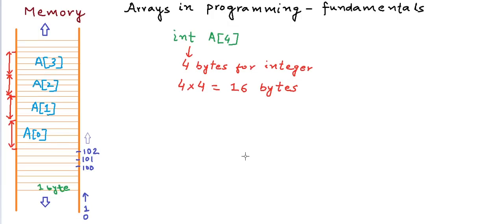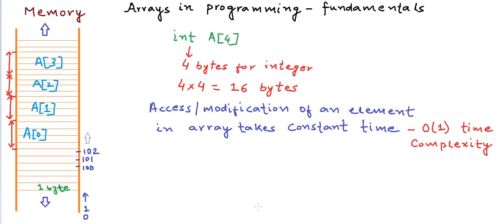Now access to an element in the array or its modification, all of these operations take constant amount of time and it is not a function of the size of the array. In other words, we can say that the time complexity for accessing or modifying an element in the array is big O of 1.